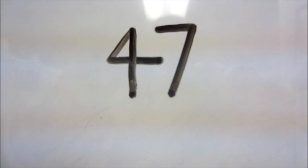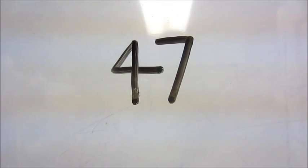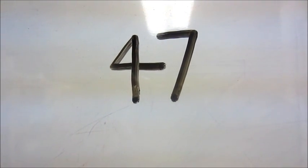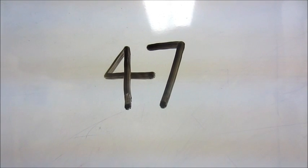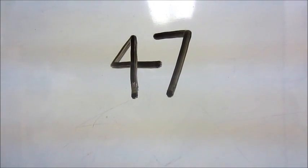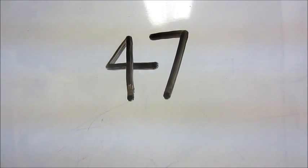The same is true for whole numbers. In the whole number 47, there is an invisible decimal to the right of the 7. We just don't always write it.